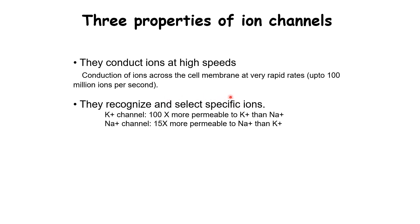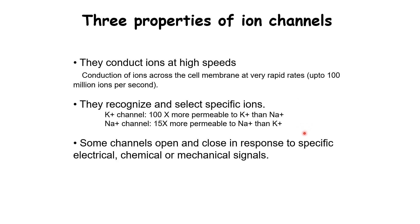The second property is that ion channels are quite specific to particular ions. For example, the potassium channel allows almost 100 times more potassium ions to pass through than sodium, and similarly sodium channels allow 15 times more sodium ions than potassium ions. We will later look at how these specificities are achieved. Finally, ion channels can open or close in response to specific events taking place in neurons — they are not always open or always closed, but can dynamically change as per requirement.